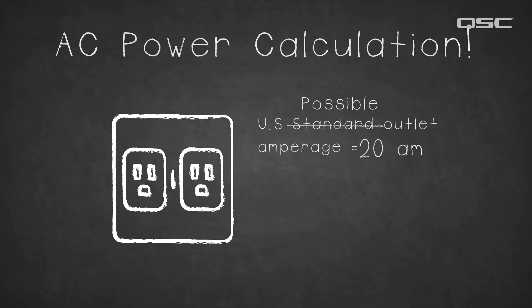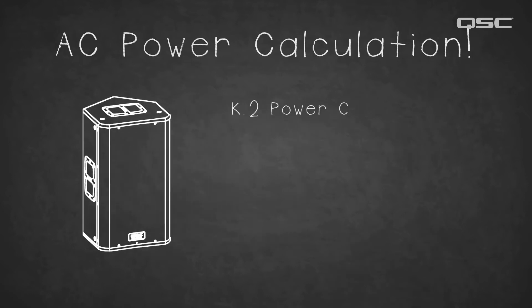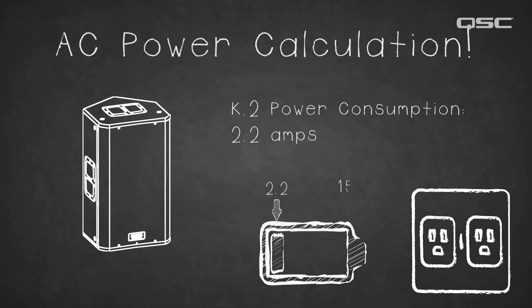There are outlets that can produce more than this, just be sure to be aware of the local limit in your region. At 2.2 amps, the K.2 is nowhere near that total limit for a single outlet.